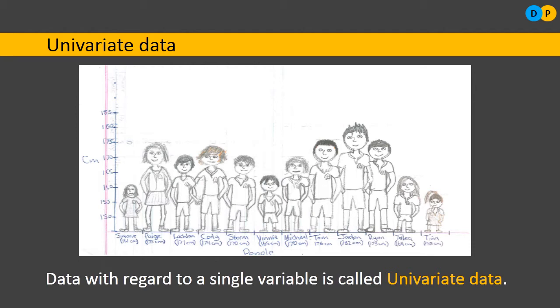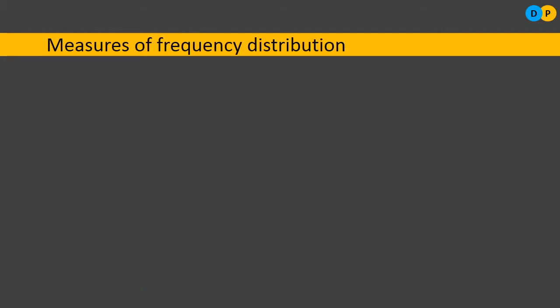In case we had considered both height and weight, it would have become bivariate data. So, data with regard to a single variable is called univariate data. Now let us study what is meant by the measures of frequency distribution.